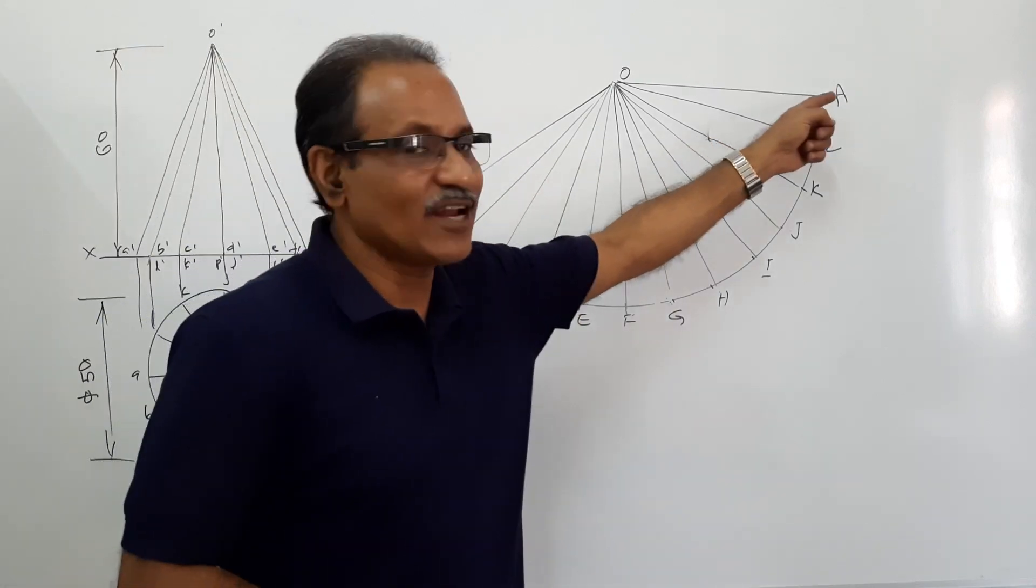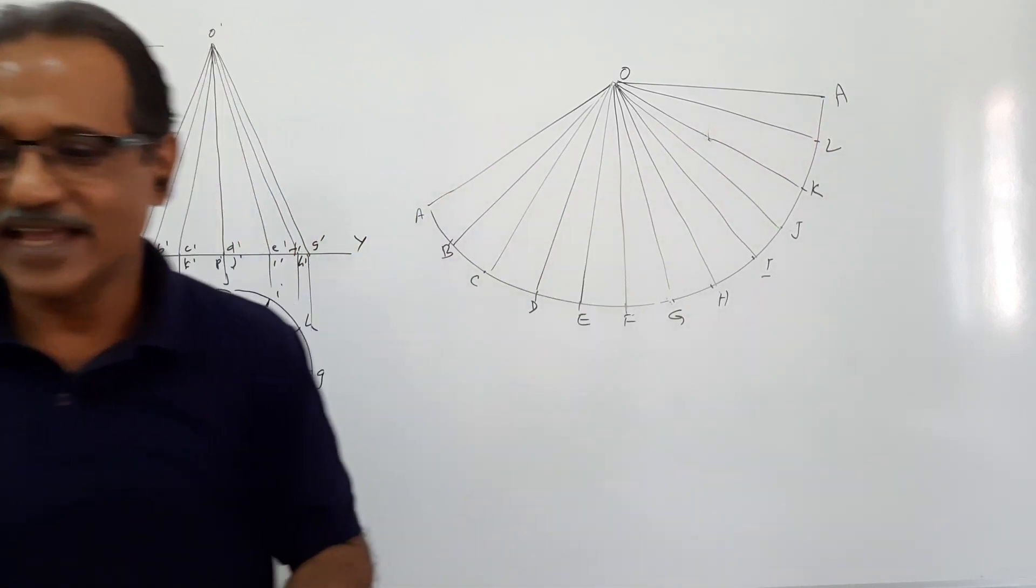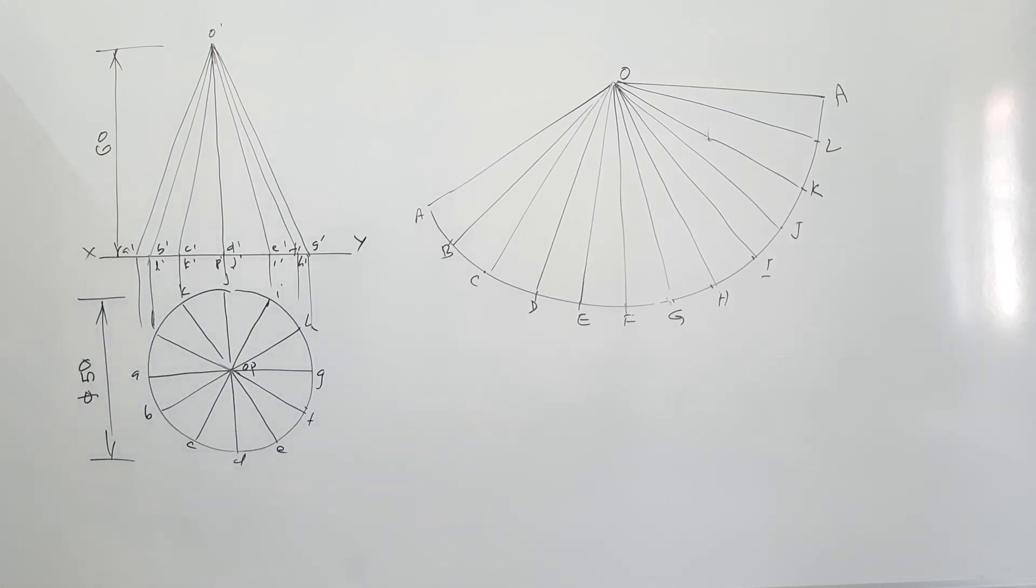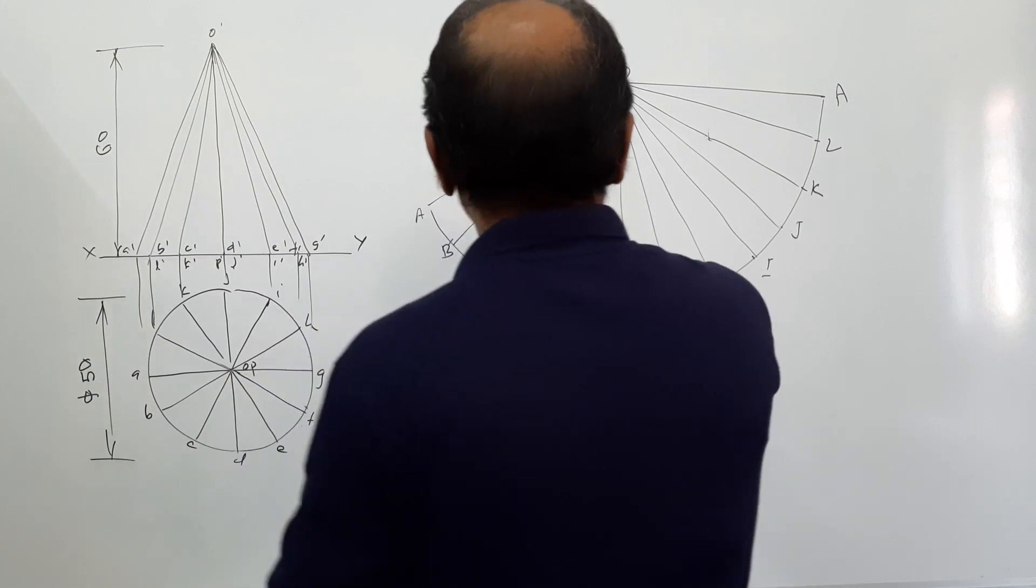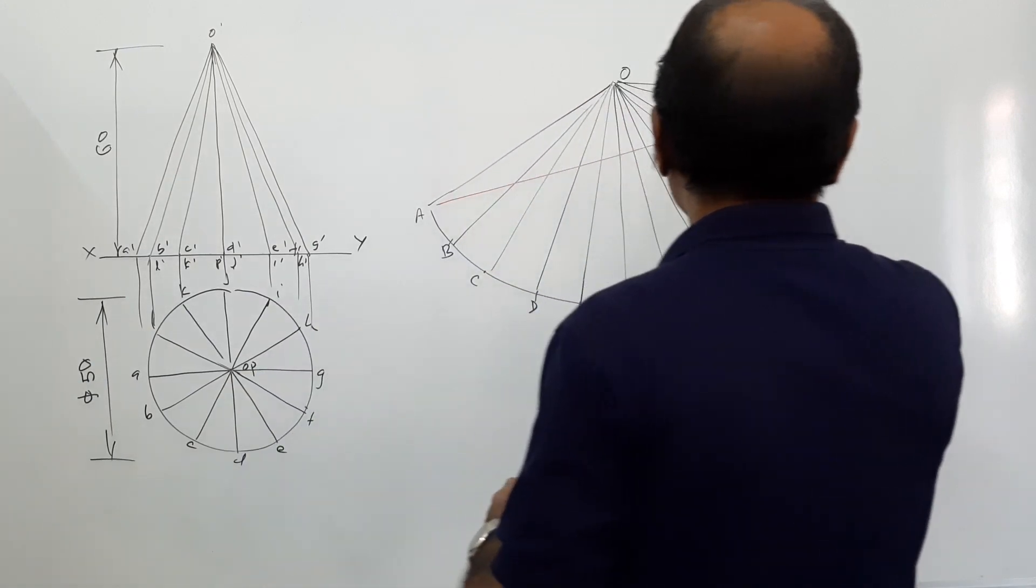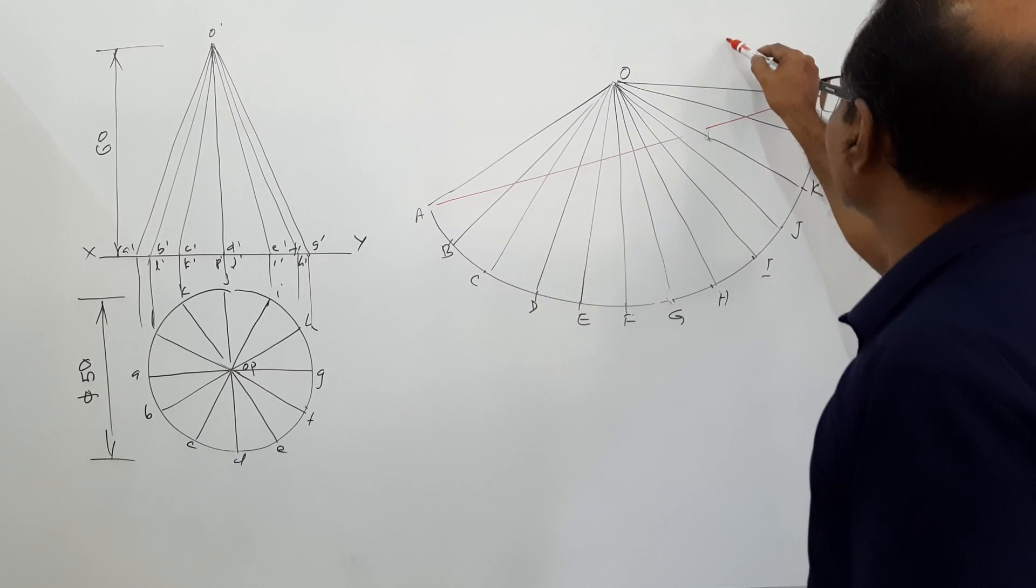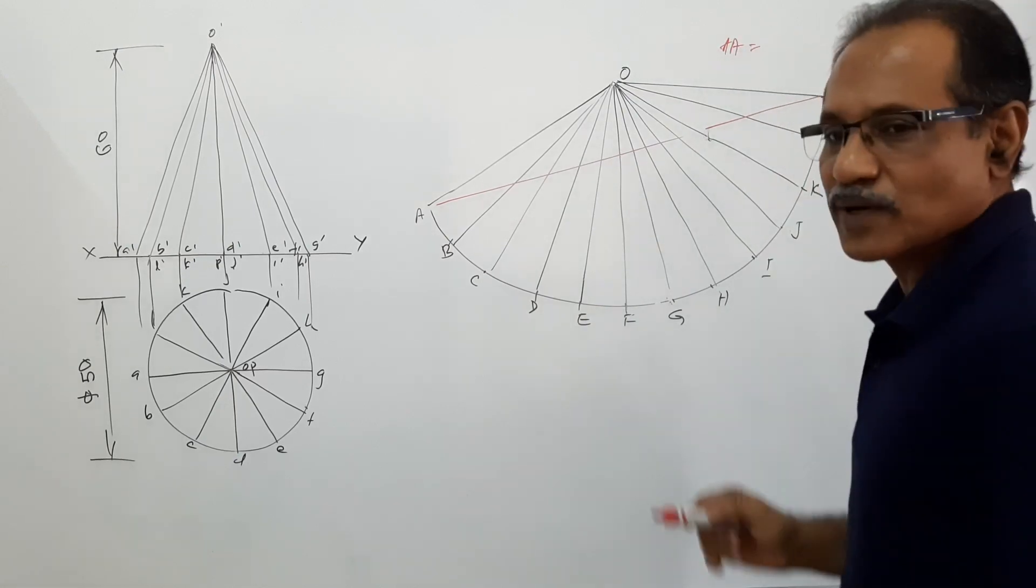With a straight line connecting this A and A in the development. That means you have to draw the development of the cone and connect A to A by a straight line. Measure this length A-A, that is the shortest path.